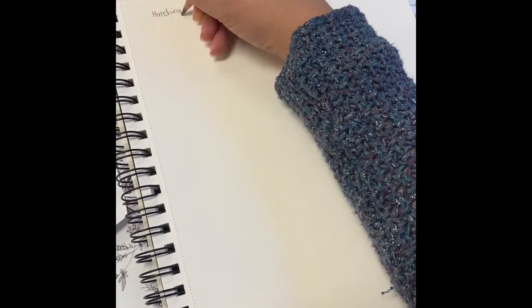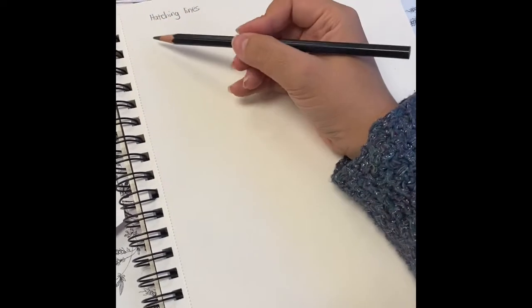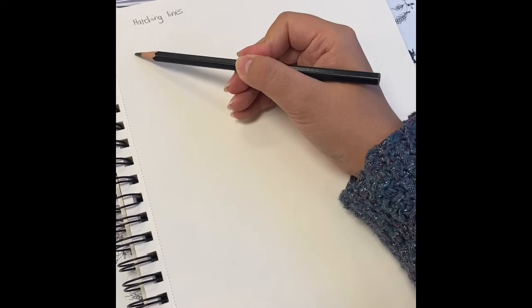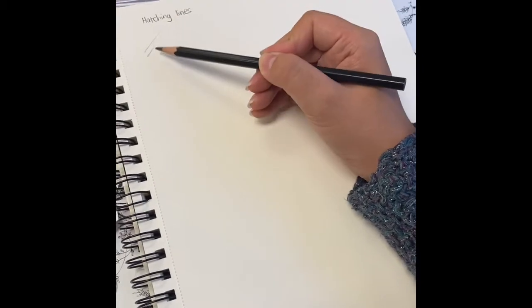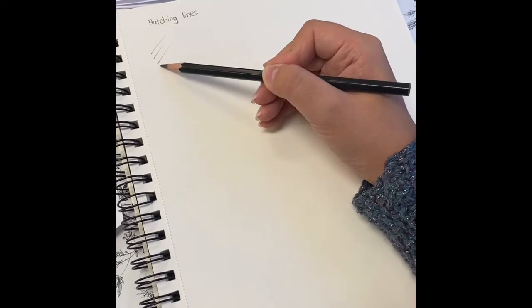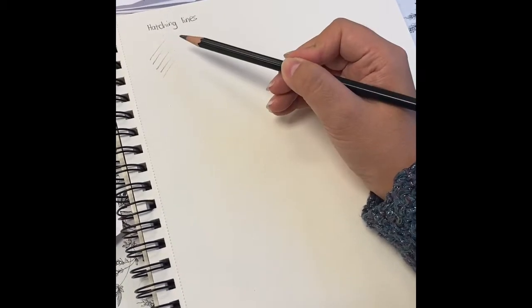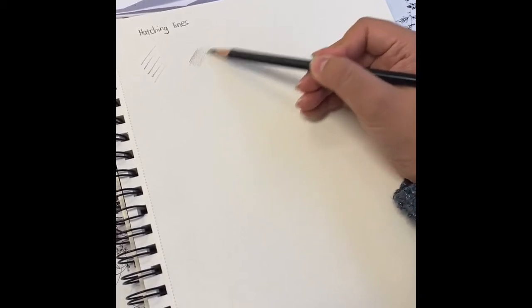First, we're going to go through hatching lines. And what hatching lines are is that they're essentially just lines that go in one direction. And they're basically sketch lines. A lot of people use hatching lines to sketch. And you're going to put pressure on one end and then lift up your pencil, so very similar to sketch lines.